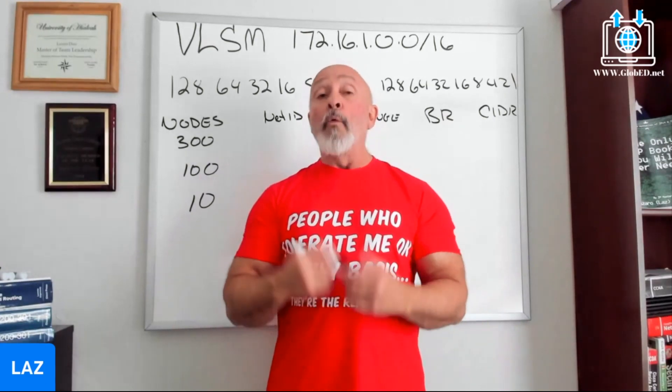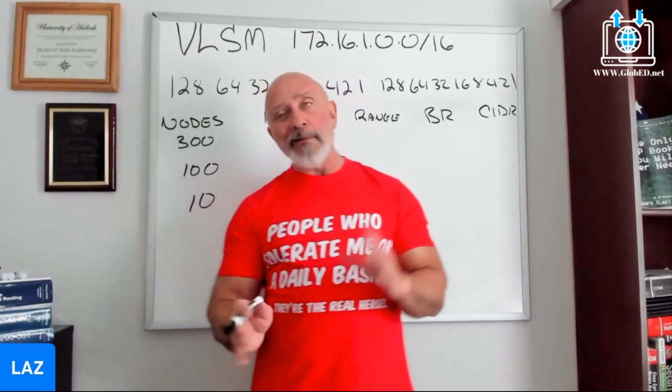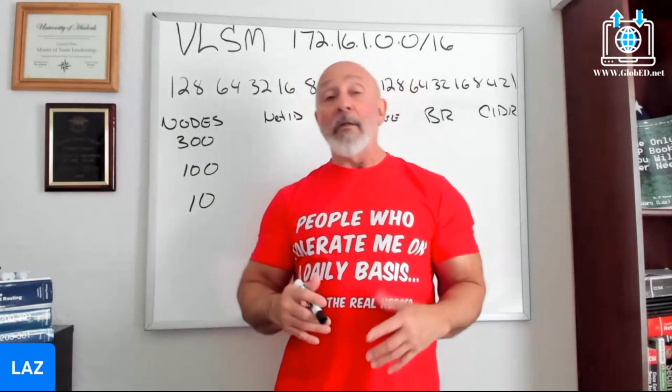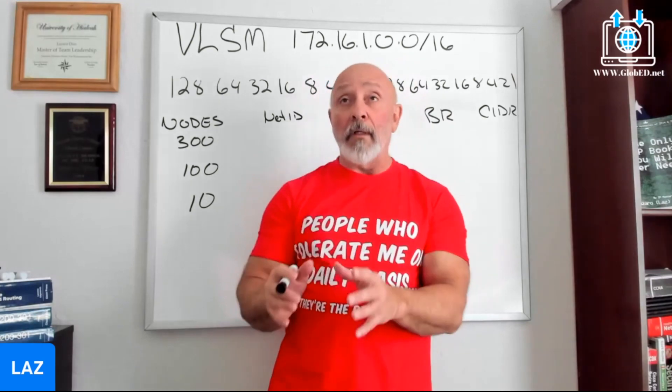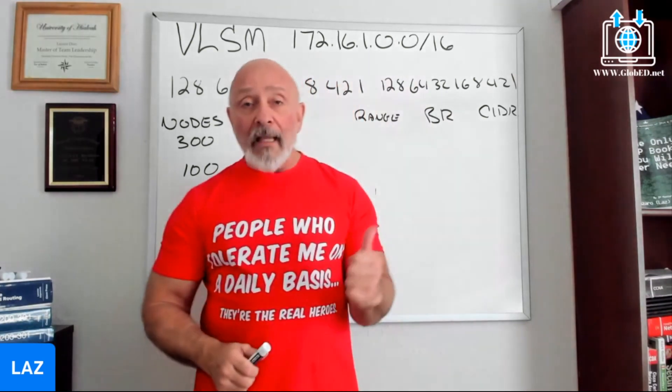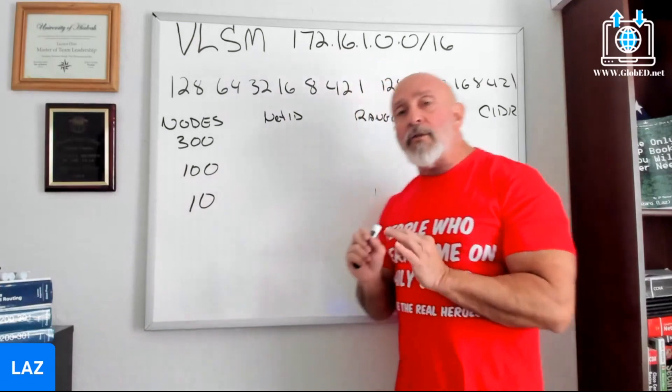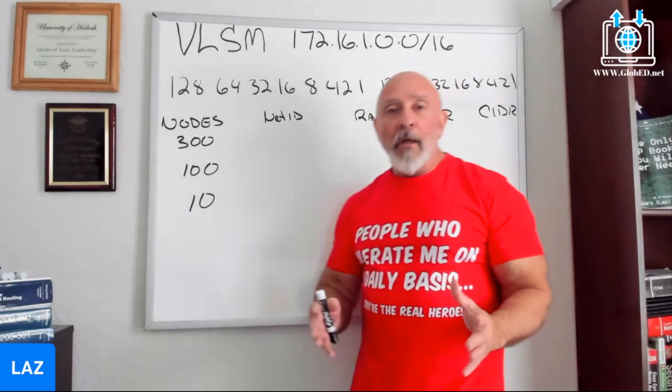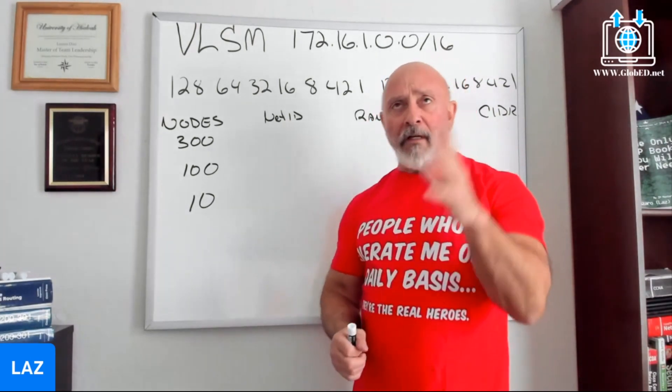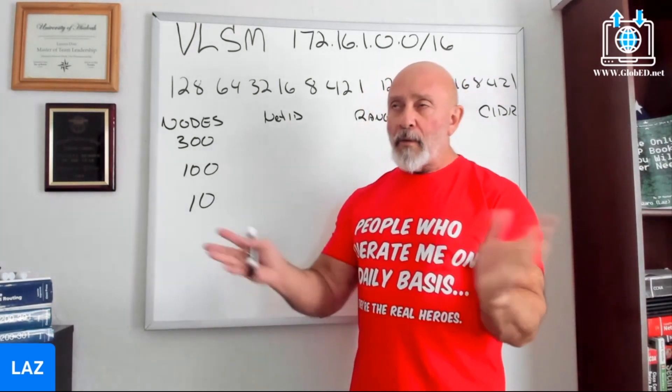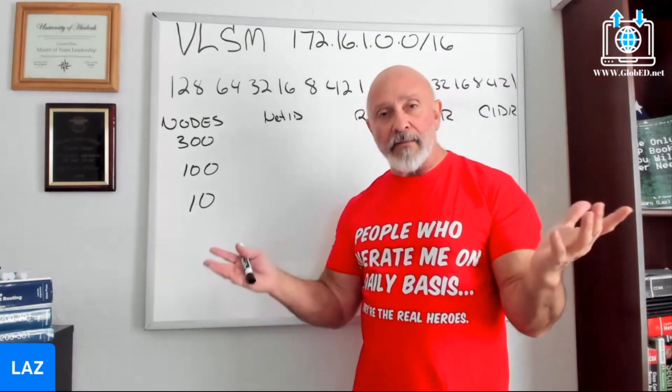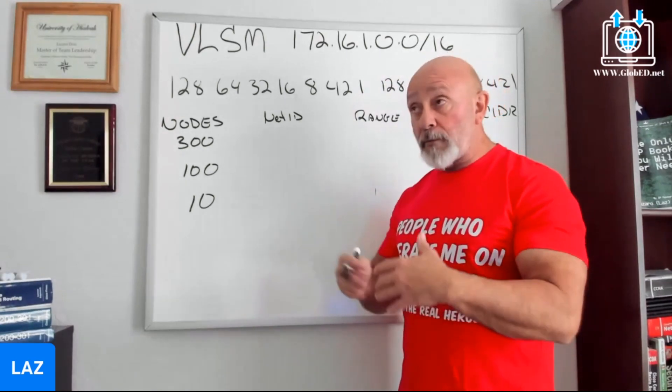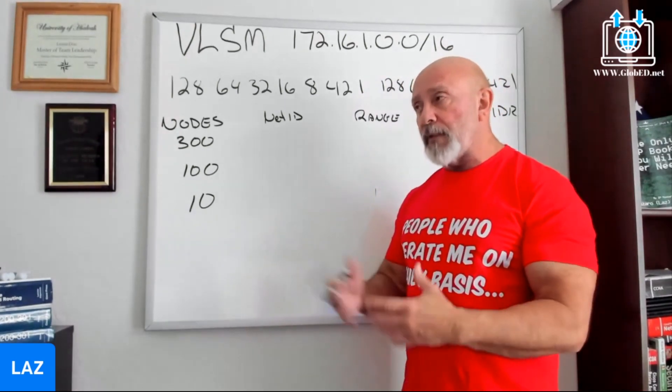Now, rules, guidelines, whatever you want to call them. With VLSM, the whole point is not to waste IP addresses. Not like when IPv4 started - hey I need a thousand IP addresses, well here's a default class B address with 65,000 because they thought IPv4 was here forever. Wrong. That's why we ran out of IPv4 addresses long time ago.